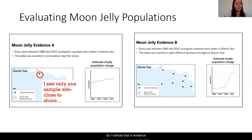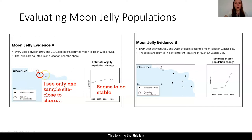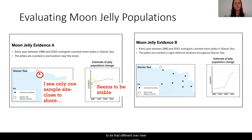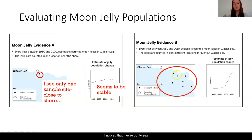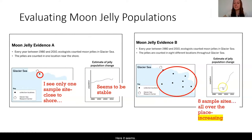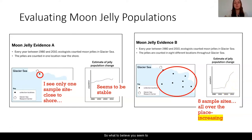I noticed that in evidence card A I only see one sample site — one collection location. The graph seems to show a fairly straight line, like we saw in the game we played when populations were stable. The population number doesn't really seem to be that different in 2002 than it was in 1980. In evidence card B, I noticed a lot more dots — they're out to sea but also along the shore, telling me they took data from multiple different locations. The moon jelly populations there seem to have increased — this reminds me of the increasing population graphs we saw in the game.